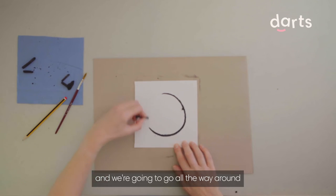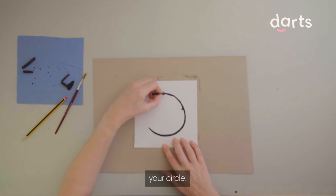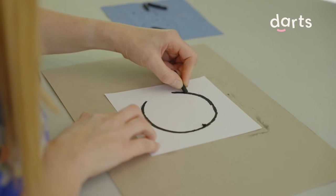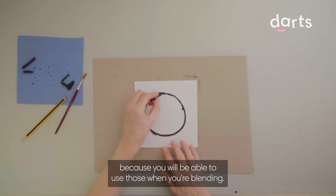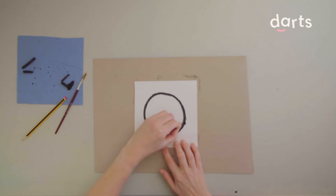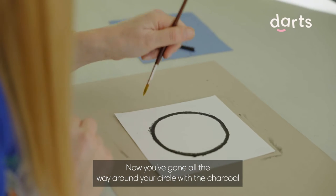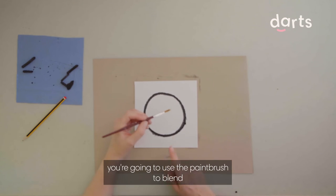Don't worry about the bits of charcoal that are coming off because you will be able to use those when you're blending. Now that you've gone all the way around your circle with the charcoal, we're going to use the paintbrush to blend the charcoal inwards.